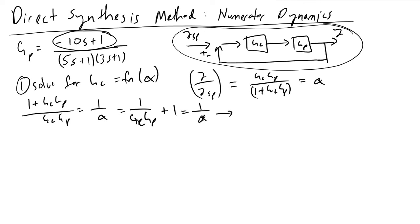This can be simplified down to 1 over gc*gp plus 1 is equal to 1 over alpha. If we subtract the 1, we would have 1 minus alpha over alpha. Actually, this numerator should be 1 minus alpha, so 1 minus alpha over alpha is equal to 1 over gc*gp.